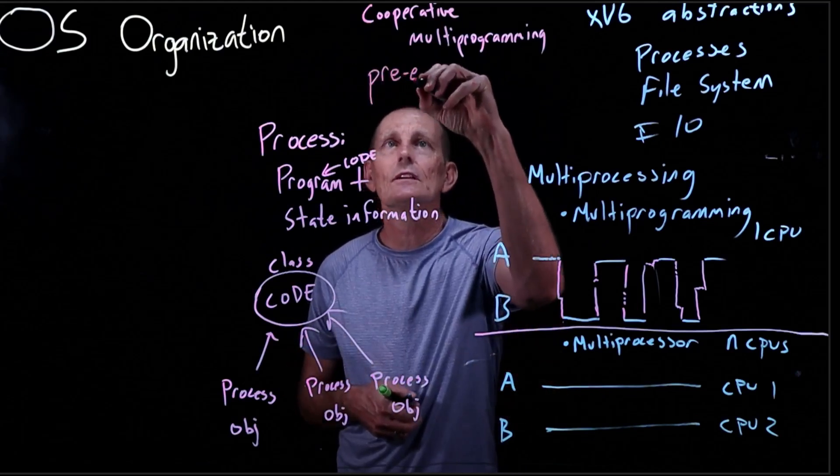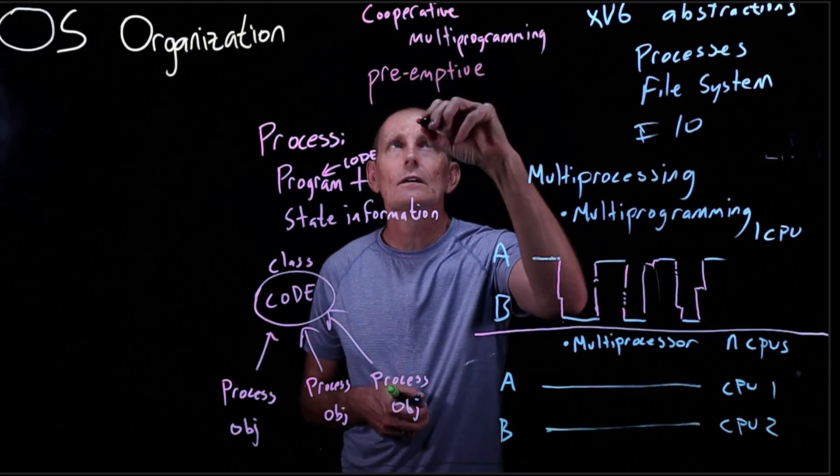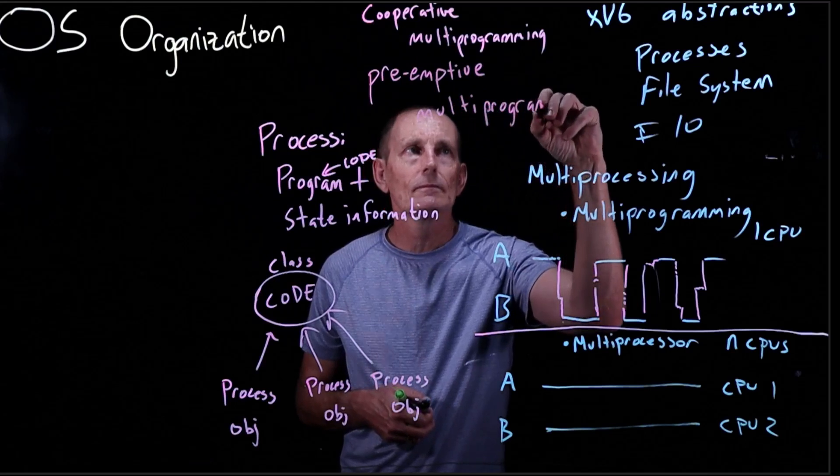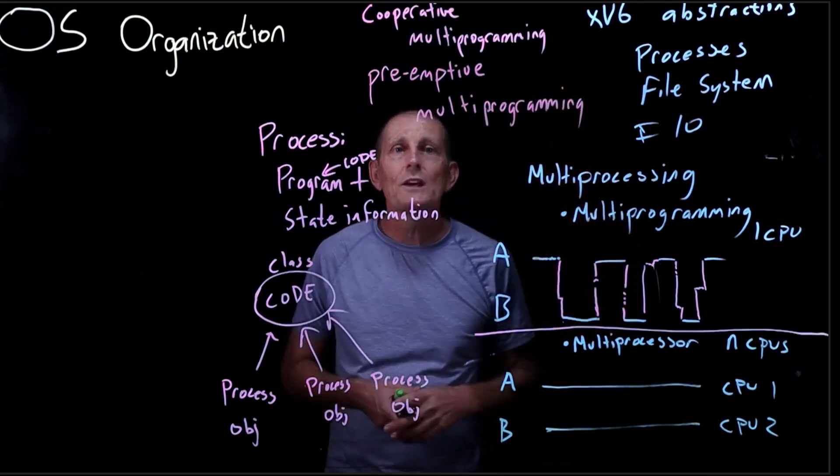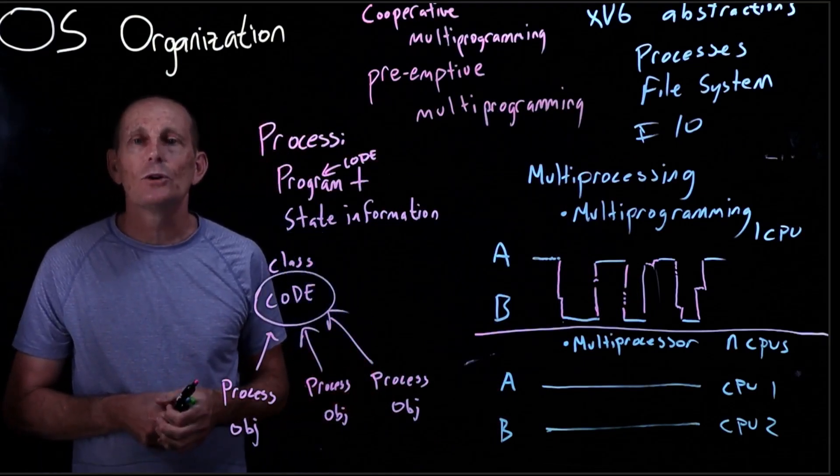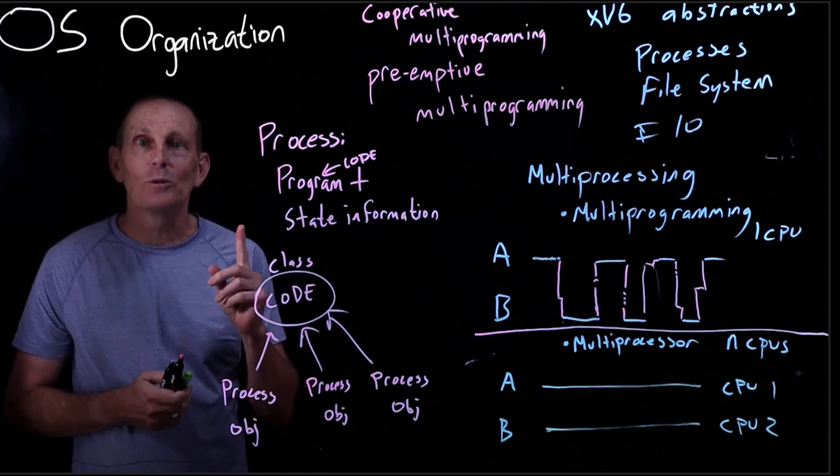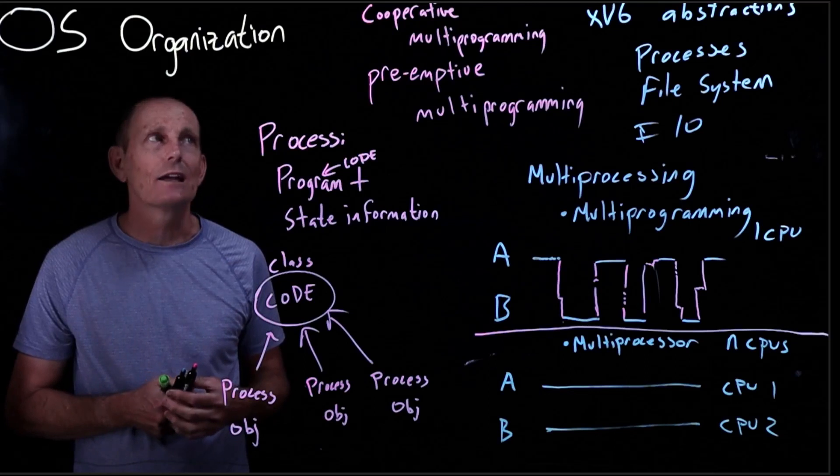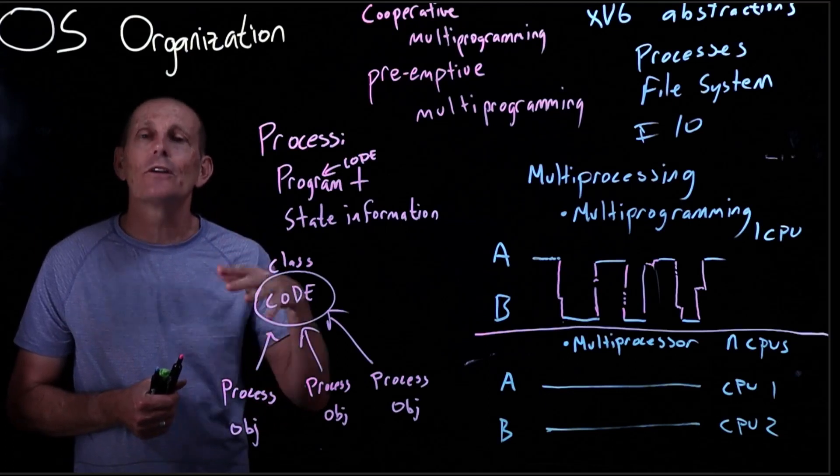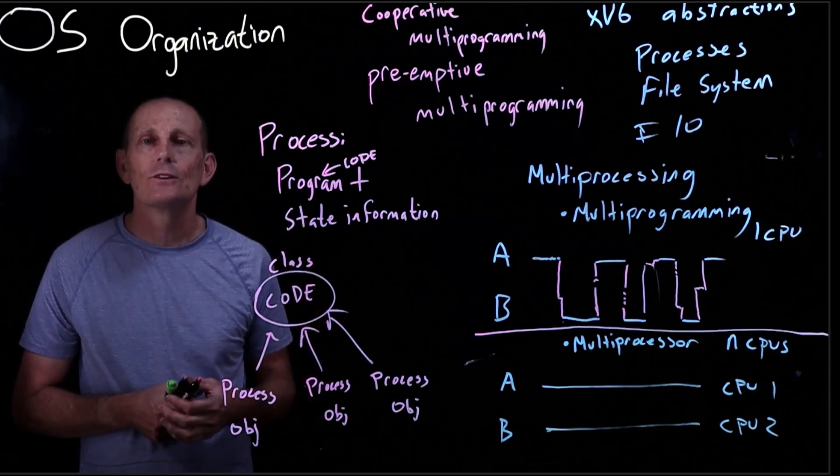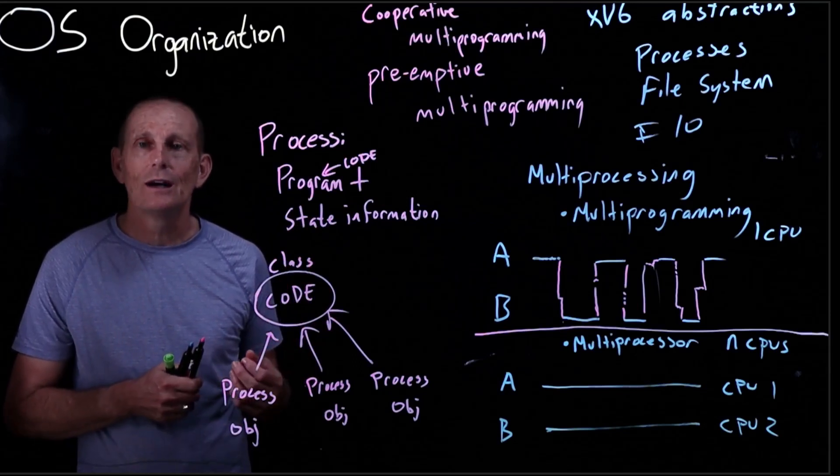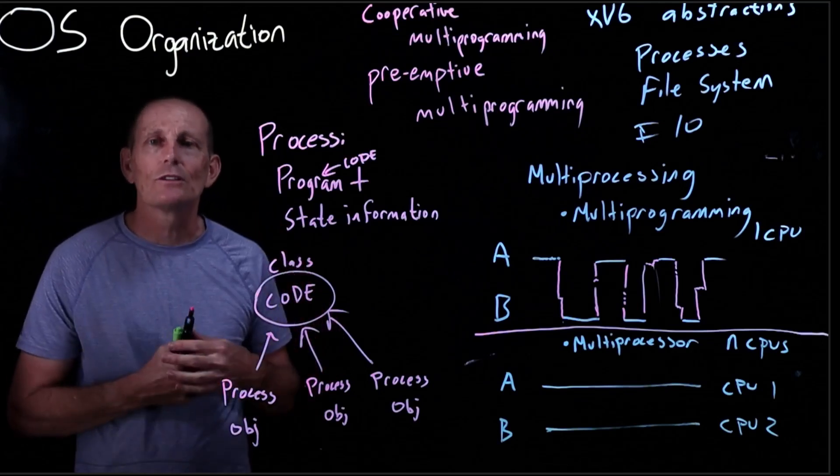We can also have preemptive multiprogramming. Both Windows and Mac OS started life doing cooperative multiprogramming. Actually they started having a single program running, but then shortly thereafter they added cooperative multiprogramming where a particular call would allow another process to run, so that would get switched out, switched back. The good part about that is, you know, in the middle of some tight loop you're running, it's not possible that you're going to get swapped out.